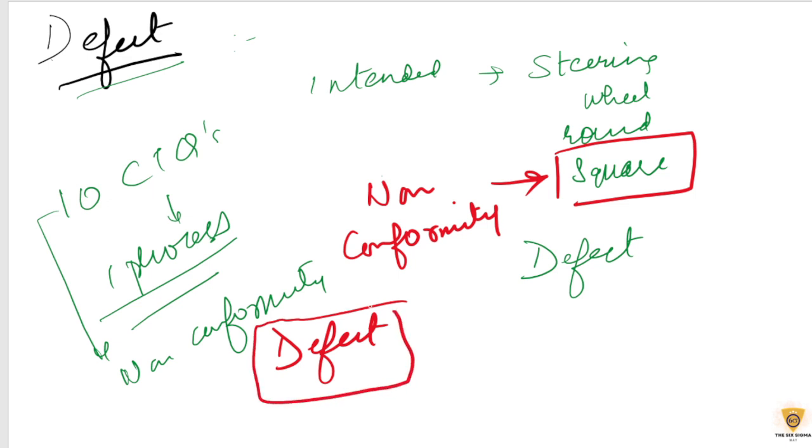Got it. Now if we move on to defective. Now what exactly is a defective? A defective is a unit with one or more defects.